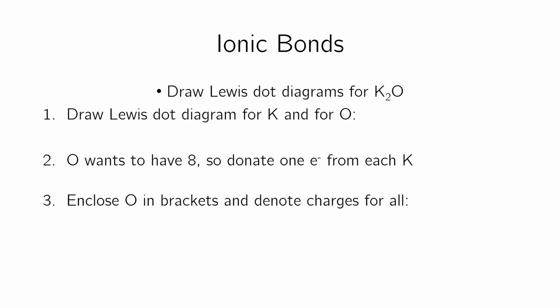This is just another example. If you want to draw the Lewis dot diagram for K2O, you draw the Lewis dot diagram for K and for O. O wants to have eight, so donate an electron from each of the Ks and enclose O in brackets and denote charges for all. So I have K dot, K dot, and then O six dots. Each one of these will give up their electrons like that. Now they're happy they got taken away. And then I have to enclose this in brackets and I'll write, either I write like this or I can write 2K plus and then like this for O minus two.